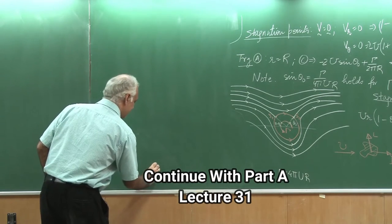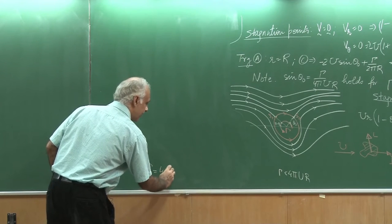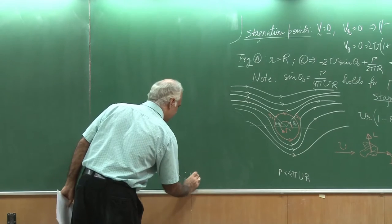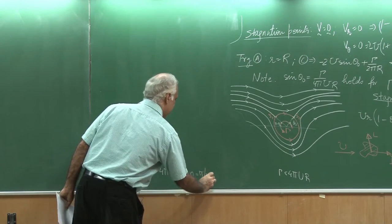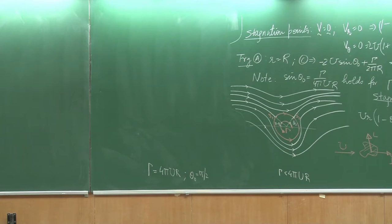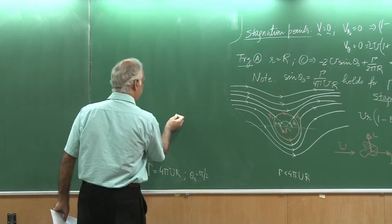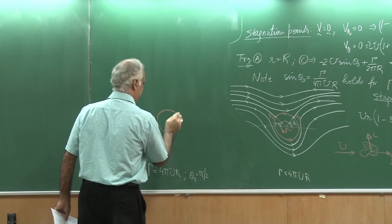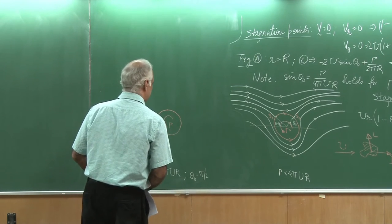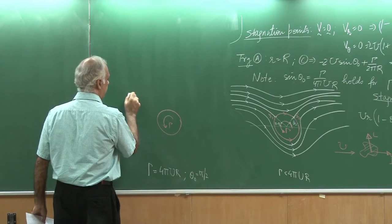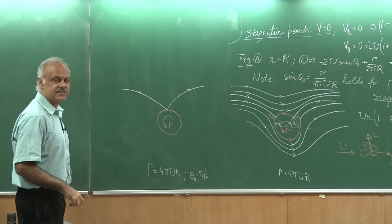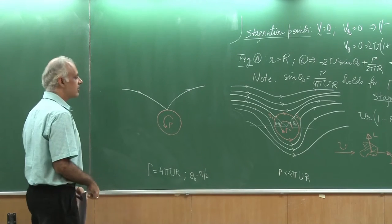Let us draw the streamline for the case where gamma is exactly equal to 4π u r. This time the stagnation points are at π/2. Let us see how this picture gets modified. This is my gamma and this is the stagnation point. This is the stagnation streamline and of course, the circle is also a stagnation streamline.